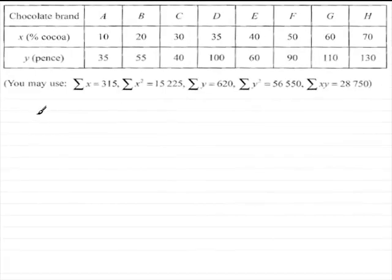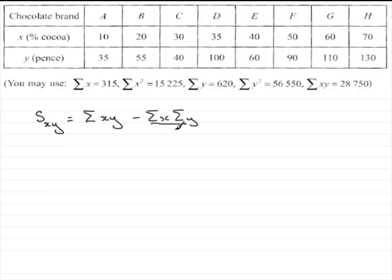Now to calculate Sxy, what you've got to do is use the formula which you should know is the sum of xy, sigma xy, minus sigma x multiplied by sigma y, all divided by n. And all we need to do is just put the values in that you see in the table here. So sigma xy is 28,750, so put that in, 28,750.